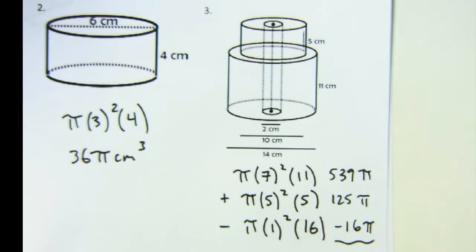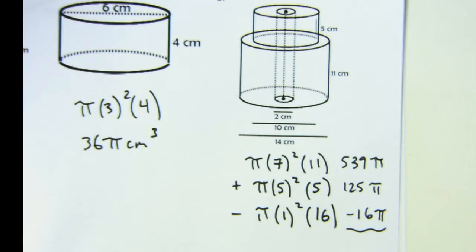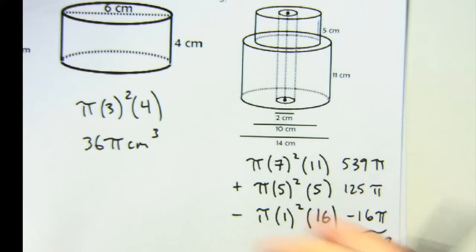Now they all have pi's, and so we can just add 539 pi plus 125 pi minus 16 pi is 648 pi. Cool.